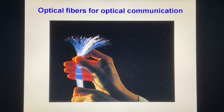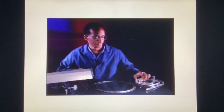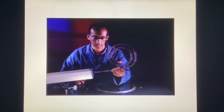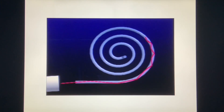Optical fibers for optical communication — all modern communications use optical fiber. Fiber optic cables such as these have revolutionized communications. Here is a larger version of a fiber optic cable known as a light pipe. When we shine light in one end of the pipe, much of the light comes out the other end despite the bends in the pipe, because the light is totally internally reflected at the inner surface and channeled from one end to the other.